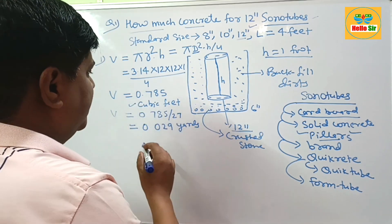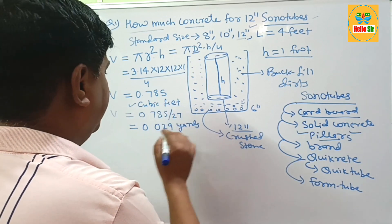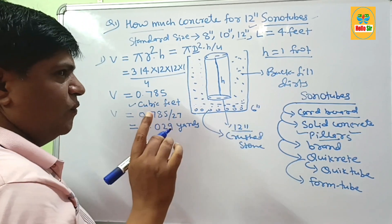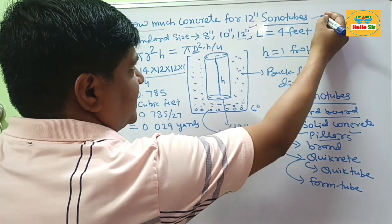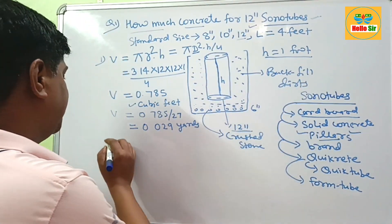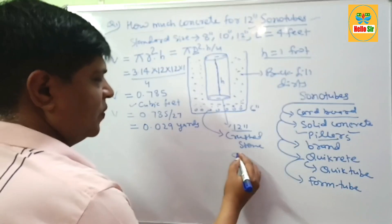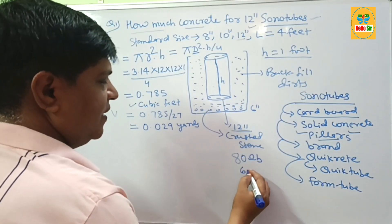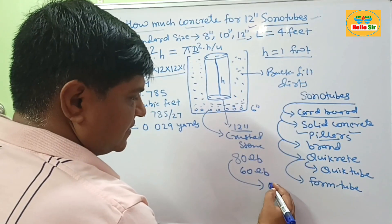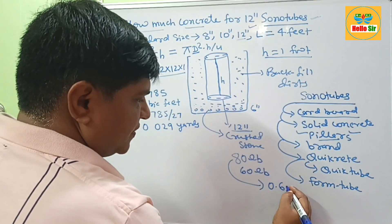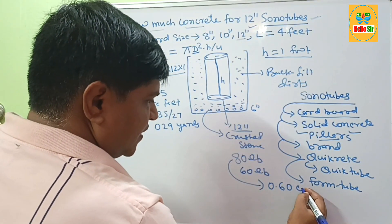In two measurements, you have calculated cubic feet and yards. The question is how many concrete bags are required for 12-inch sonotubes. The concrete bags are in the form of 80 lb and 60 lb. One 80 lb bag of concrete yields 0.6 cubic feet.